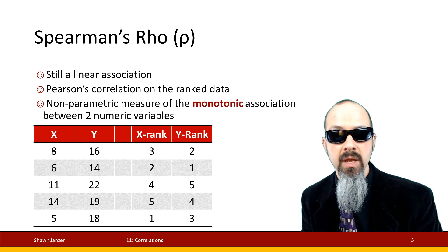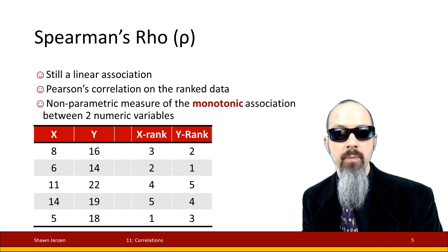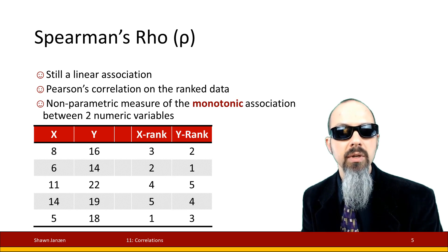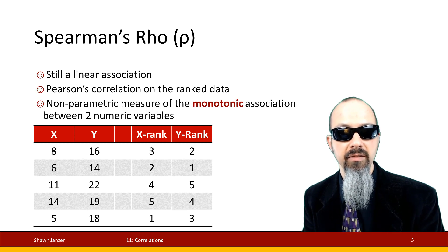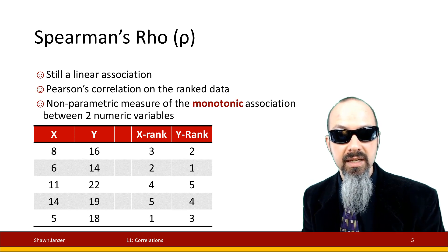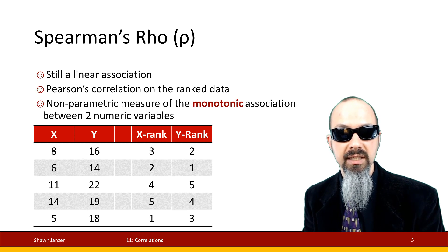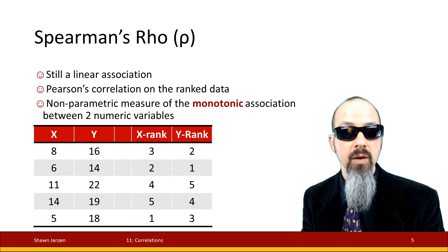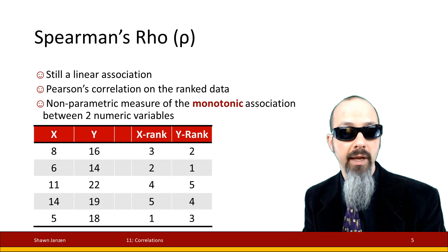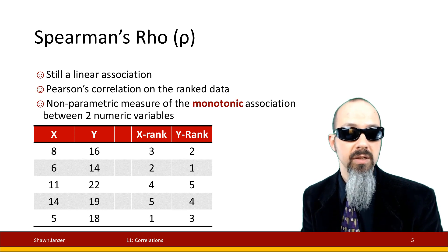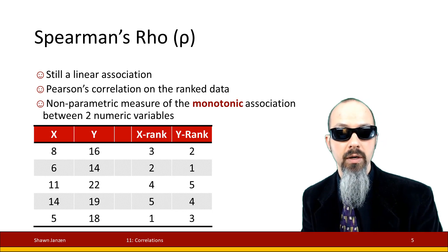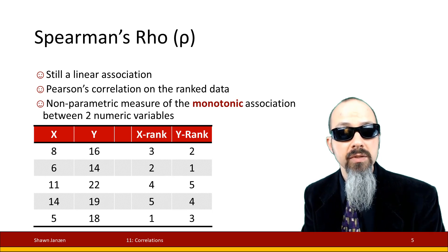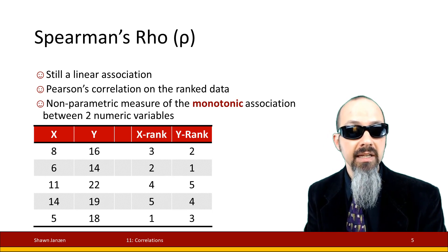Monotonic association — look at the table on screen. I have two variables, X and Y, with some count measures between them. X values are 8, 6, 11, 14, and 5. Y is 16, 14, 22, 19, and 18. Think of these as numeric values. When it changes into ranks, we switch over to the X rank and Y rank categories, putting your X and Y values into ranking order. We have five values, ranked from one to five in each one.